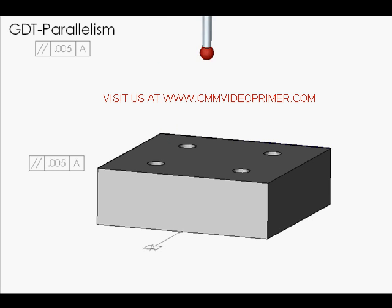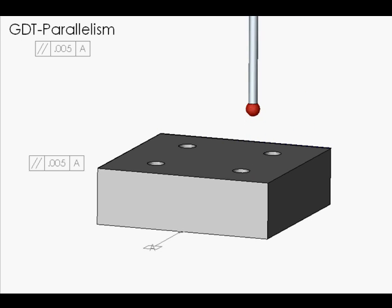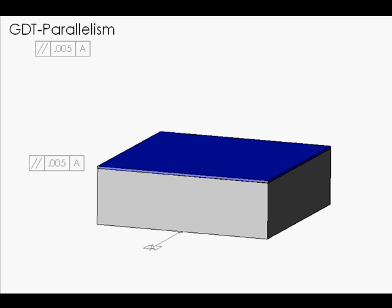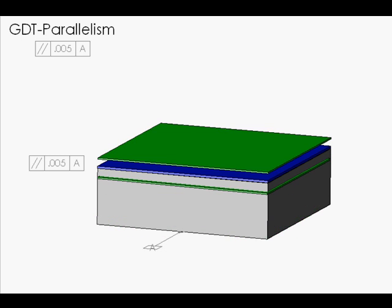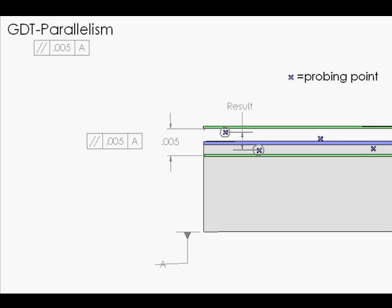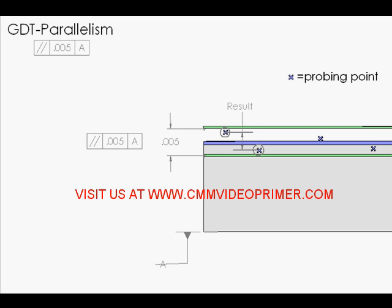A best fit surface is calculated and tolerance zones parallel to the datum are created on each side of the measured feature. High and low probing points are used to calculate the parallelism result. Direction for the deviation between points is controlled by the datum.